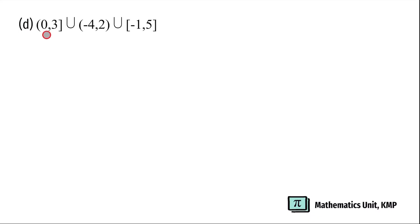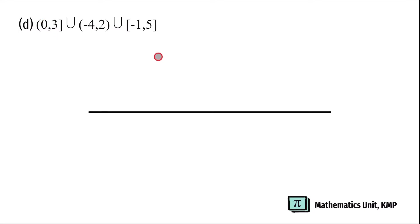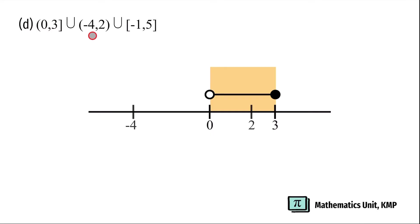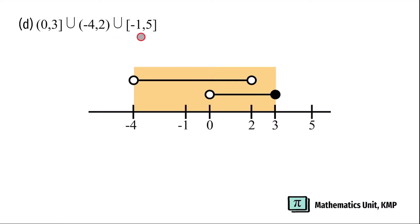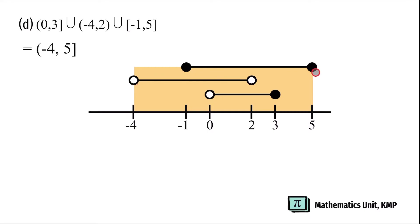Next example: half-open interval (0, 3], union with open interval (-4, 2), union with closed interval [-1, 5]. On top of 0, we use an open circle because it's a round bracket, and on top of 3, a closed circle because it's a square bracket. Connect with a straight line. For -4 and 2, both open circles; for -1 and 5, both closed circles. Performing the union operation, the section spans from -4 to 5.